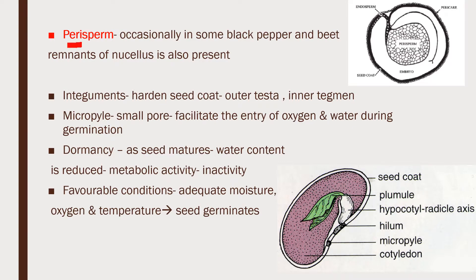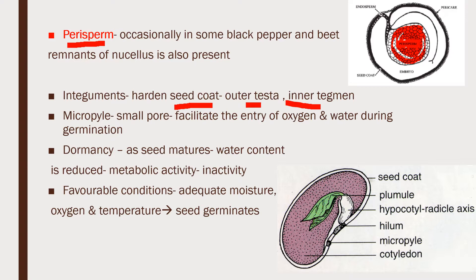Next is perisperm. In some plants like black pepper and beet, there is a dusty material inside which is nothing but the remnants of the nucellus. This remnant of the nucellus is known as perisperm. The integuments harden to form the seed coat: the outer part is called testa and the inner part is called tegmen. The micropyle is located as a small pore, facilitating the entry of oxygen and water during germination.